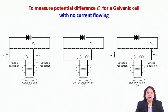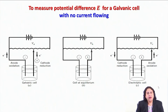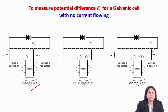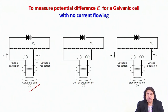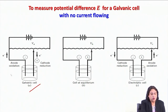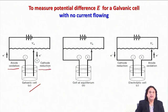Let me remind you that the experiment we are talking about is as follows. If you have a galvanic cell as shown in the figure here, you have a spontaneous chemical reaction taking place inside the cell. As a result of that chemical reaction, you have oxidation at the anode and reduction at the cathode.